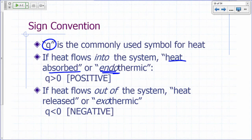Endo means going into, thermic has to do with heat. So when Q is positive, Q is assigned a positive value when heat flows into your system.